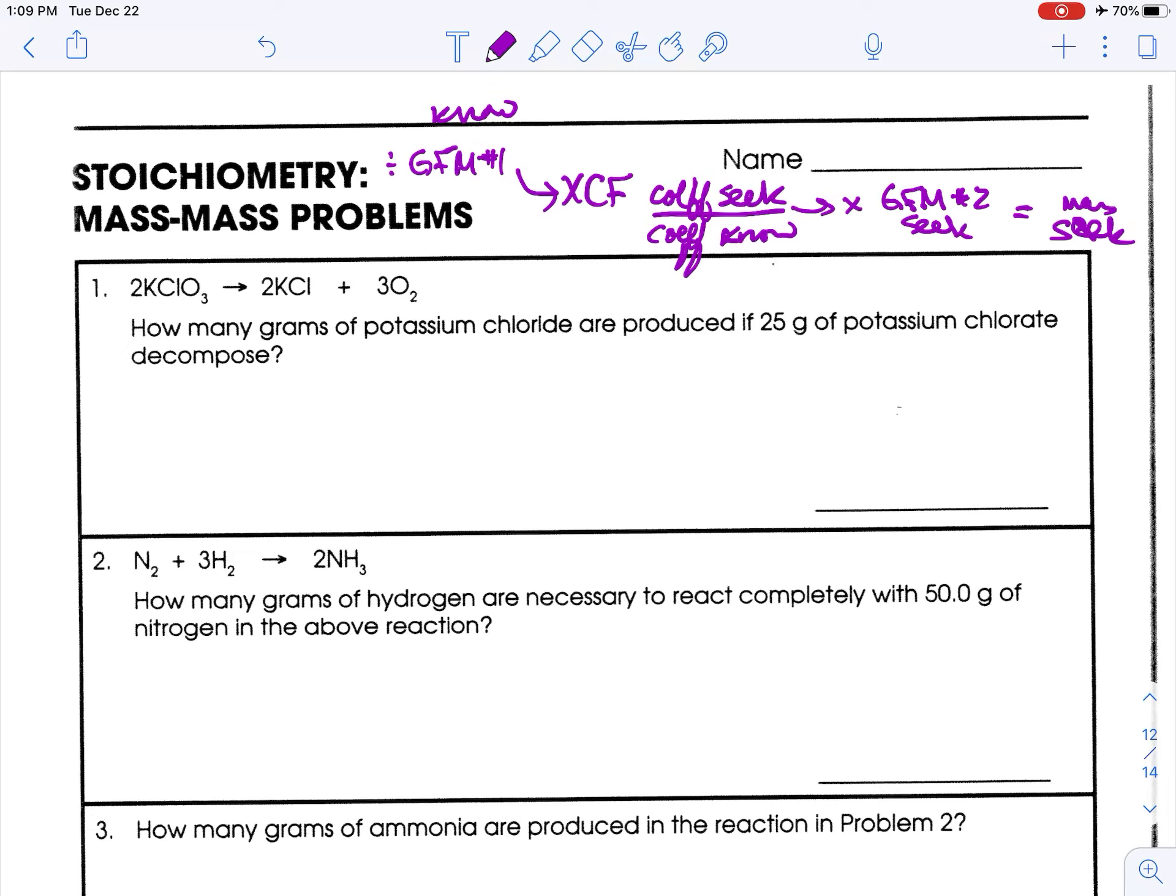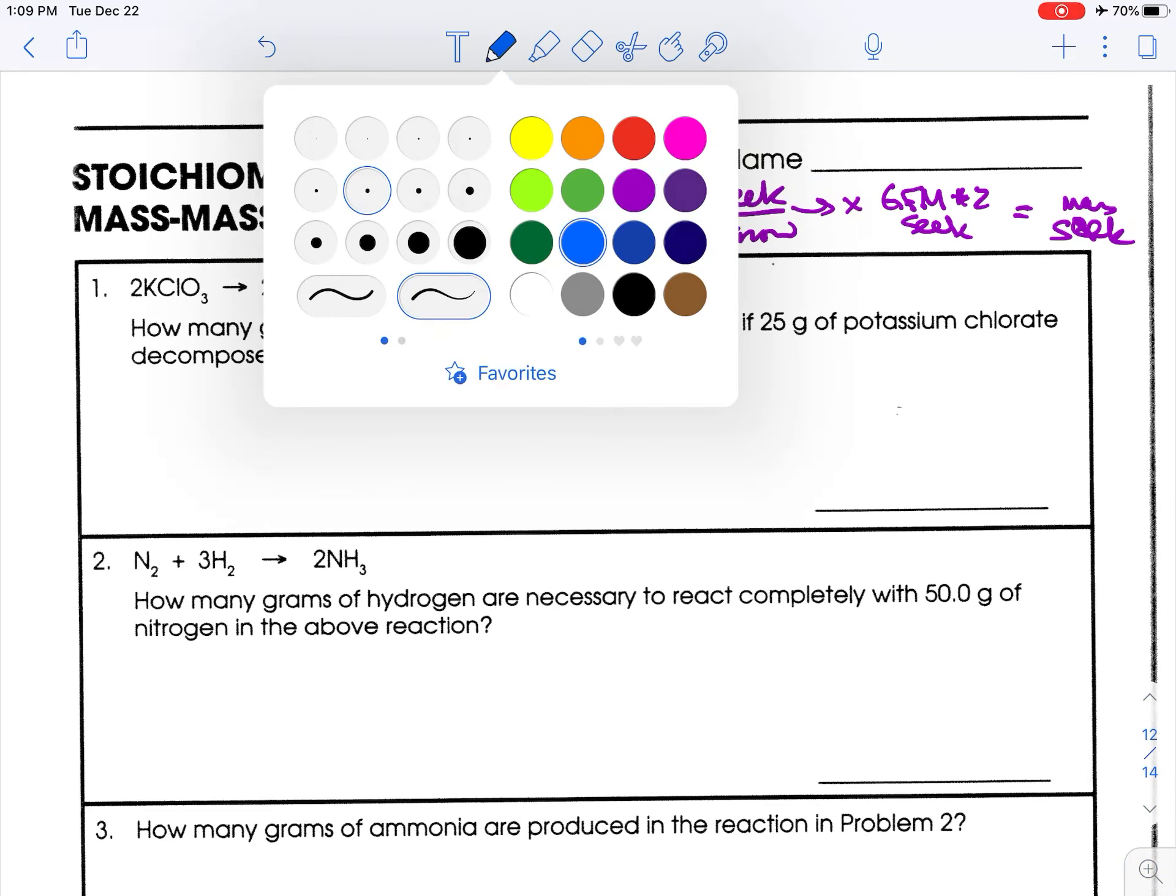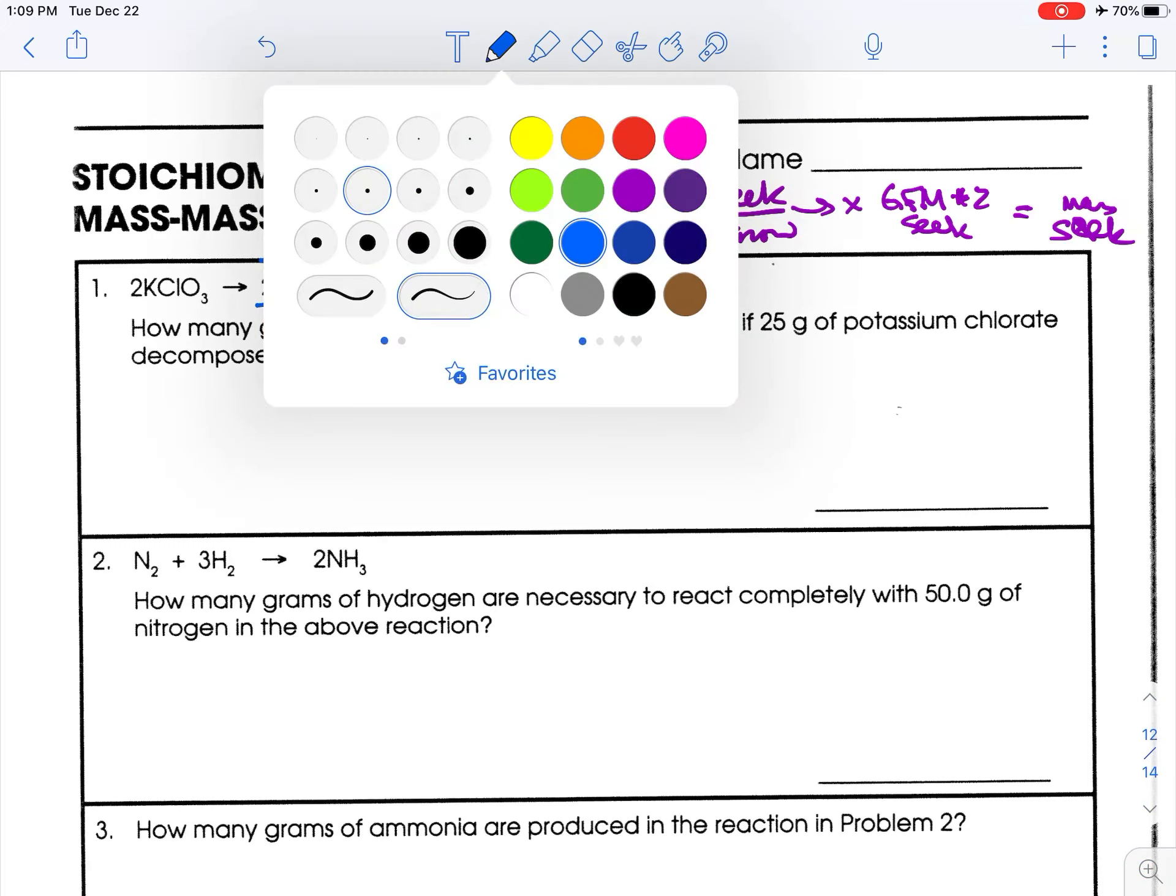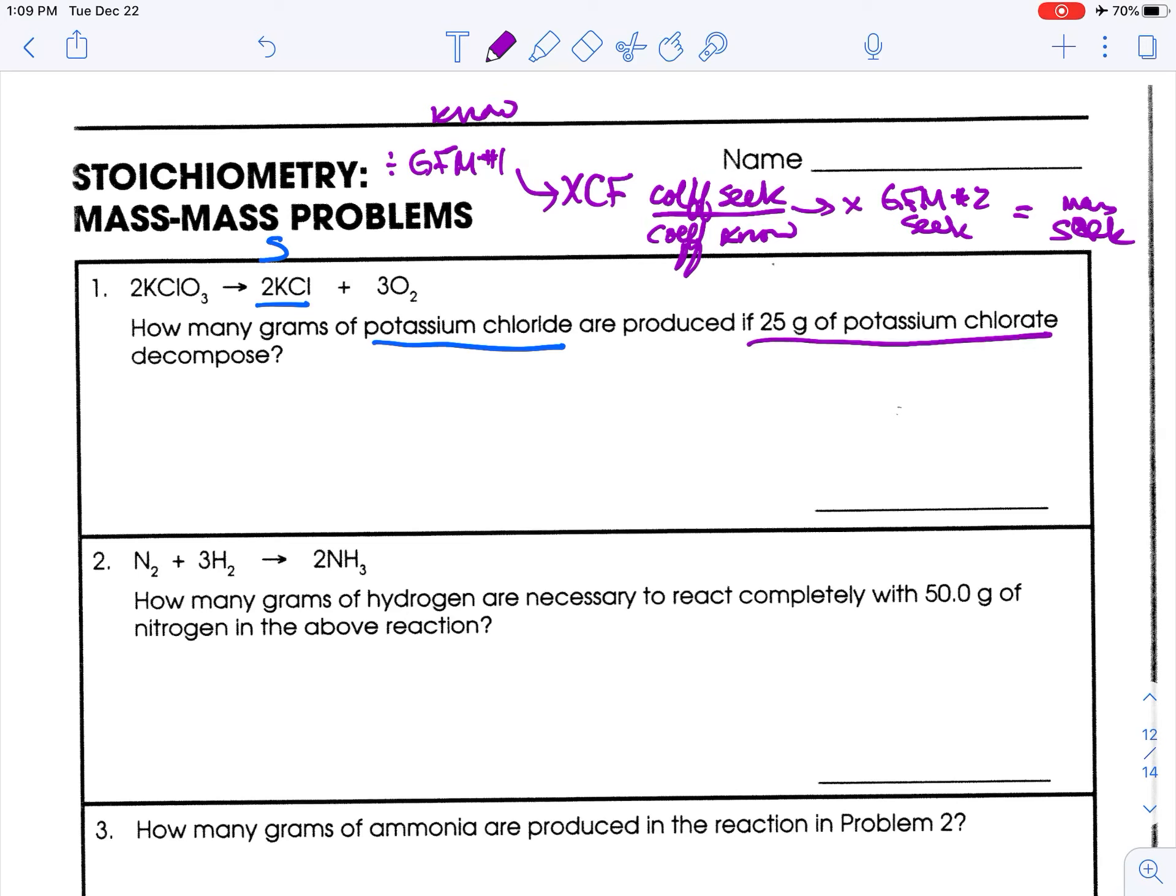How many grams of potassium chloride are produced if 25 grams potassium chlorate decomposed? So potassium chloride is what we seek. This is what we seek. We know chlorate. So we're going to start there. 25 grams of potassium chlorate. Now, before we go any further, potassium chlorate.